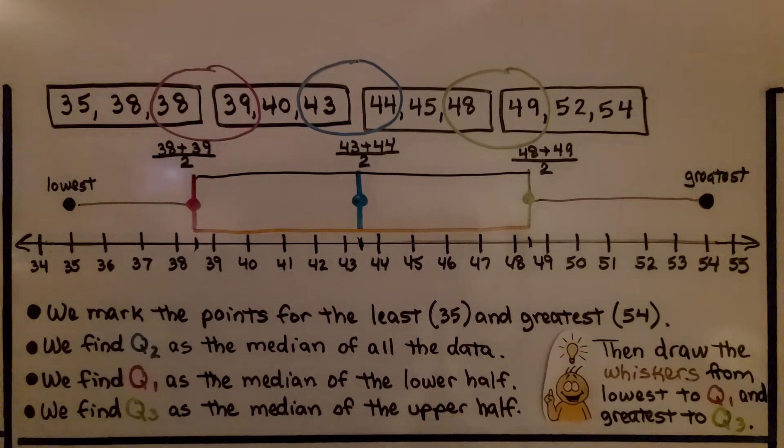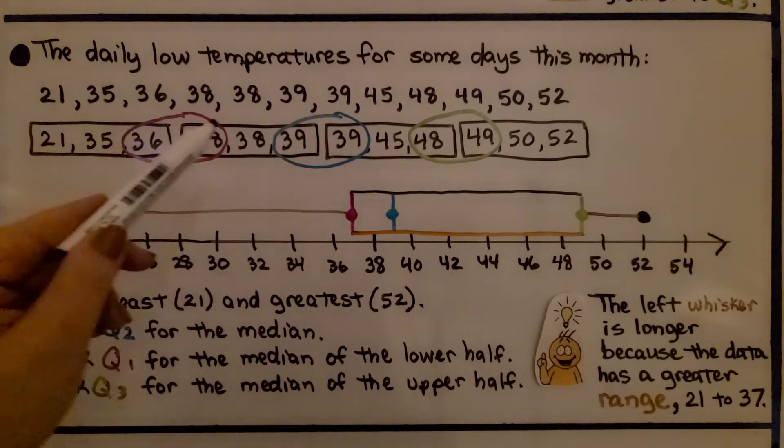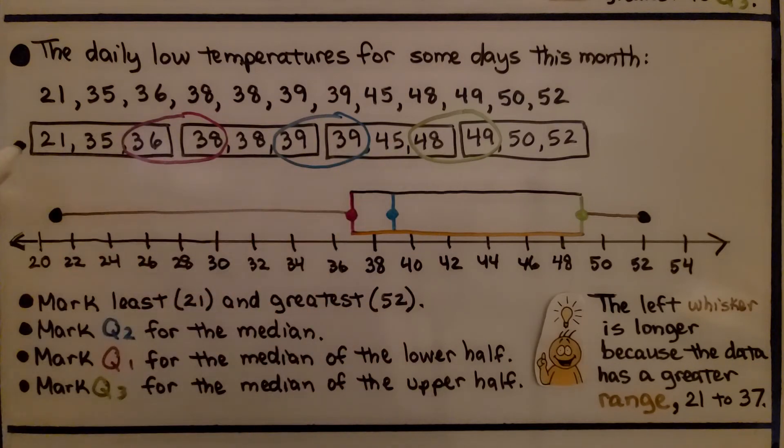Then we draw the whiskers from the lowest value to Q1 and the greatest value to Q3. We've got our box plot. Let's try another one. These are the daily low temperatures for some days this month. Now we've got 21 to 52.